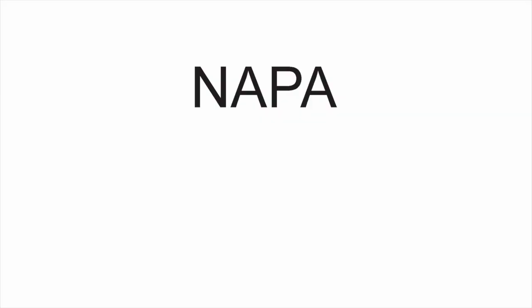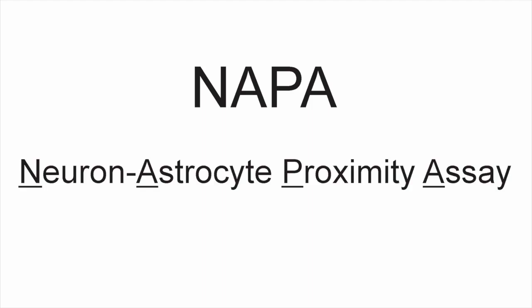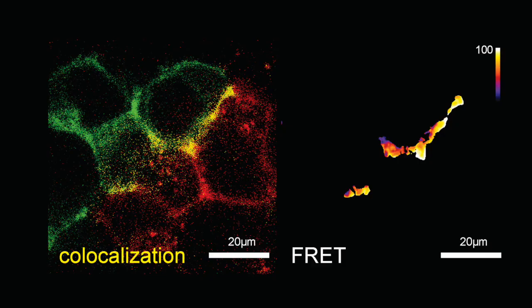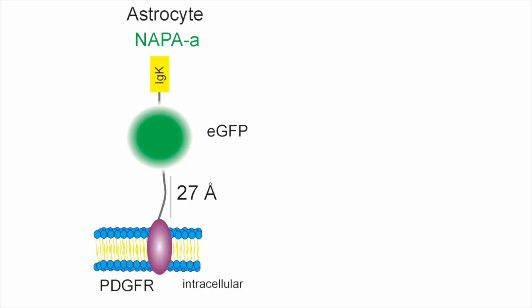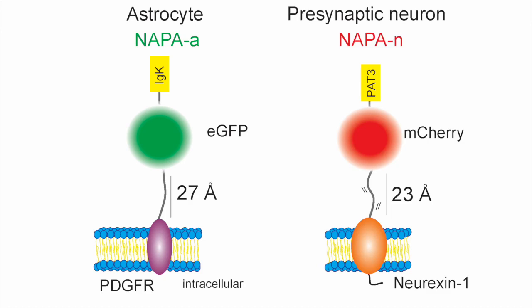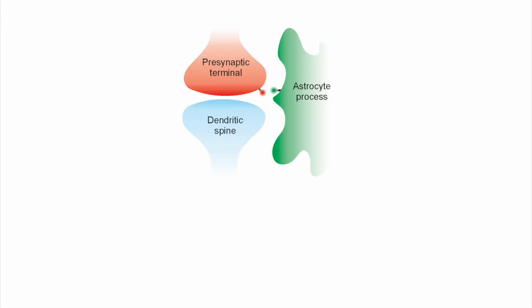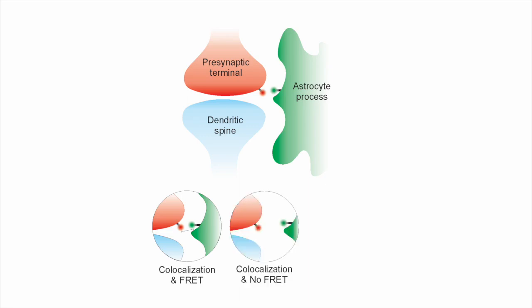To study how astrocyte processes contact synapses, we developed a tool that we call NAPA. NAPA is a light microscopy-based imaging method which uses FRET and co-localization to assess cell-to-cell contacts over multiple distance scales. We developed cell surface targeted fluorophores which label astrocyte processes and presynaptic nerve terminals. With these new probes, we can detect three types of interactions. At the most proximate, co-localization and FRET reports interactions that occur over distances of less than 20 nm. Co-localization in the absence of FRET reports distal interactions that occur between 20 and 600 nm. And at the furthest distance, no co-localization or FRET reports unresolved interactions at greater than 600 nm.